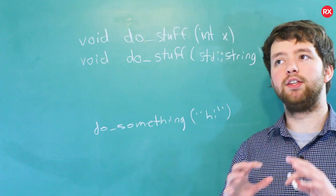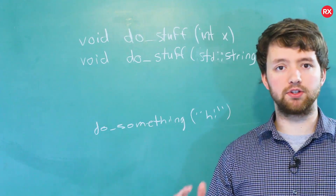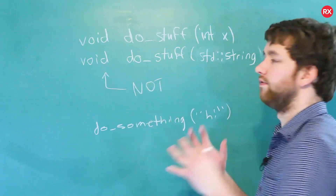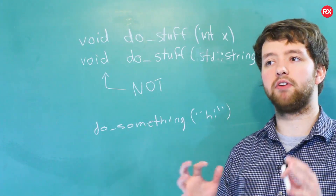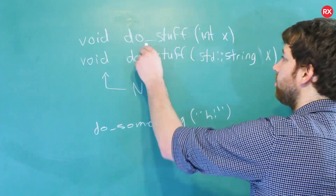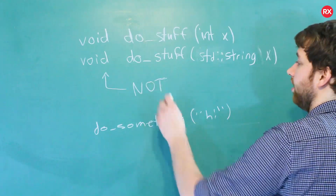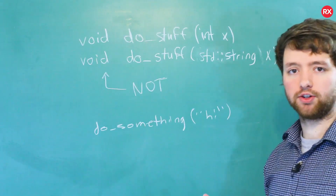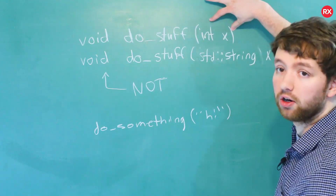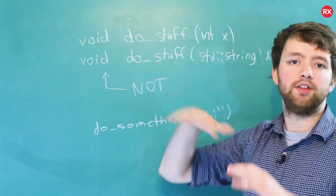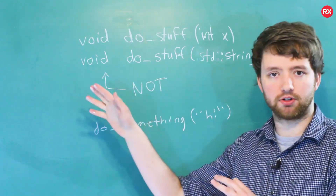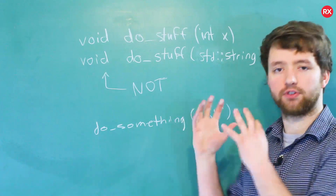Now a common misconception — this is not universal across all programming languages. In C++, the return type is not part of determining if a function is unique. The concept of whether something is a valid overload is known as the method signature. Each one of these has a unique method signature, and again, the return type is not part of that signature. If you had two exact functions with the same arguments but two different return types, that would not be okay — that would not be considered a valid overload. There has to be some other way to distinguish these functions besides the return type.